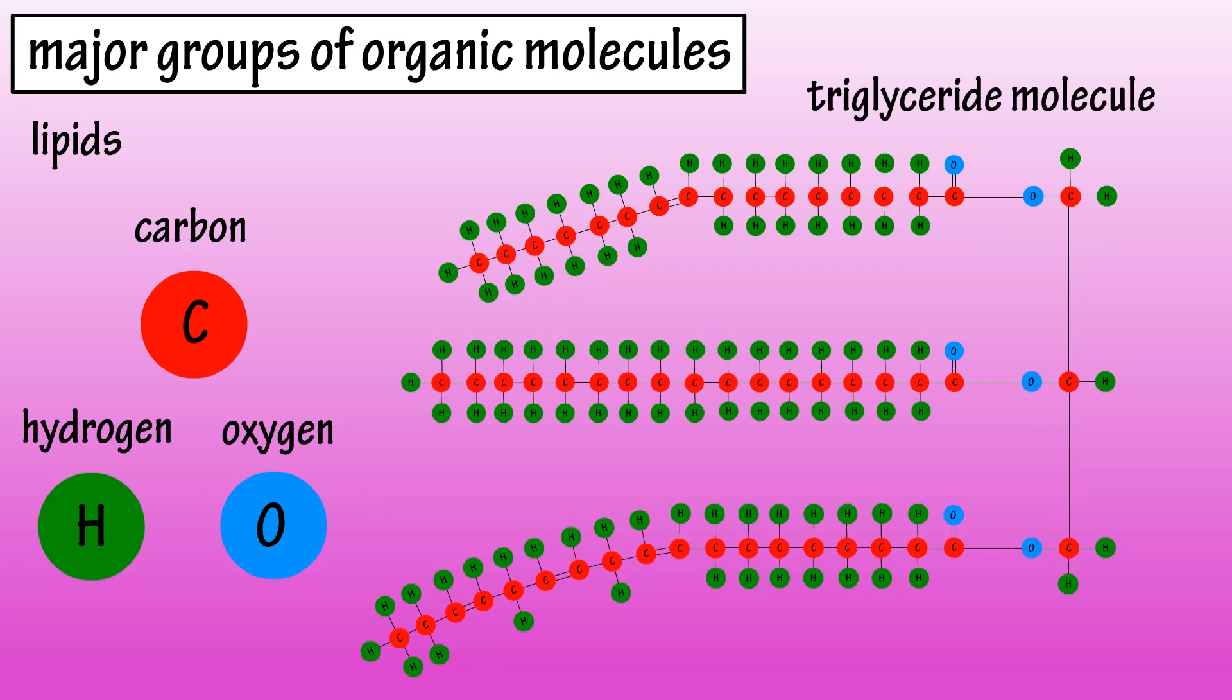Here is a linear model of a triglyceride molecule, which is a type of lipid. You can see the many carbon-carbon and carbon-hydrogen covalent bonds throughout the molecule. Some lipids do contain nitrogen and phosphorus.